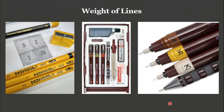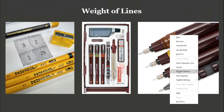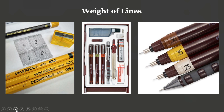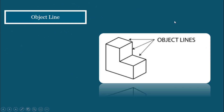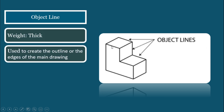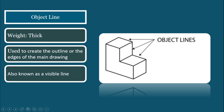In other words, the weight of lines equals the thickness of lines. To start our discussion with the different types of lines, let's start with an object line. Shown here is an example of a drawing utilizing object lines. As you may observe, these lines are thick, the purpose of which is to create the outline or the edges of the main drawing. As such, it is also known as a visible line.